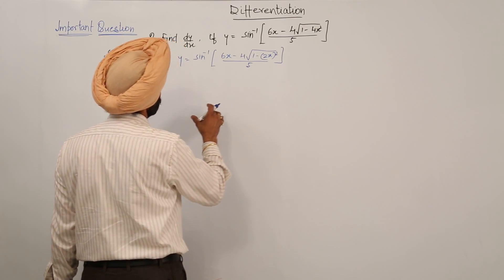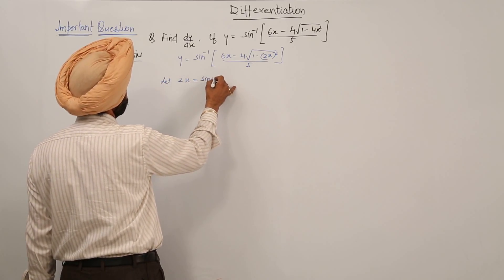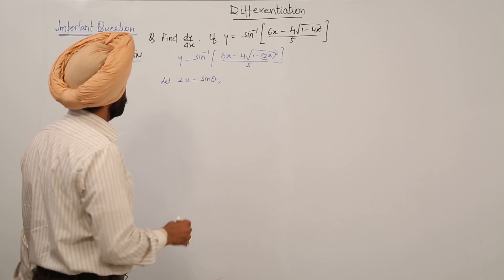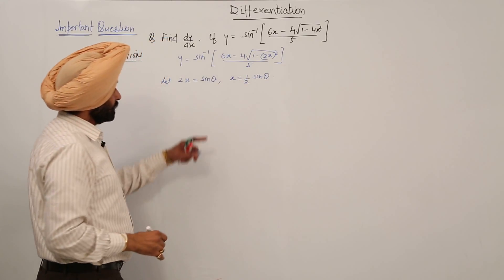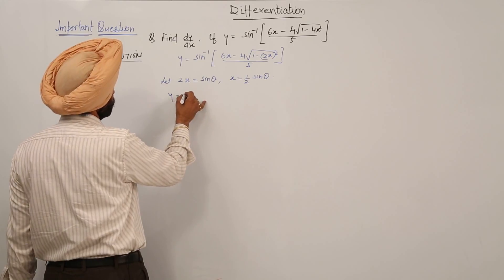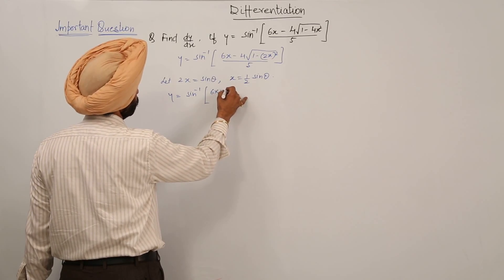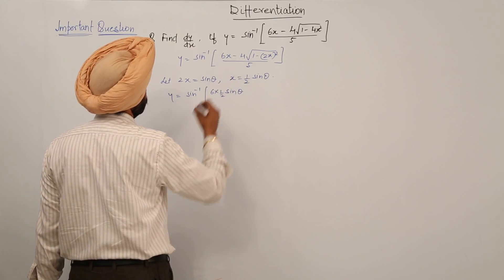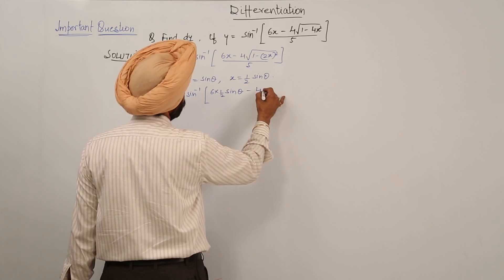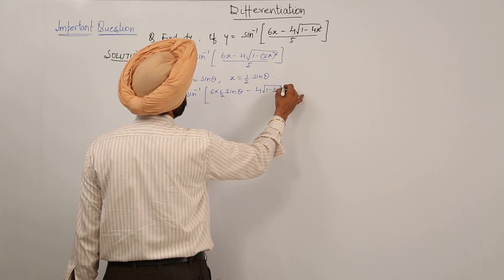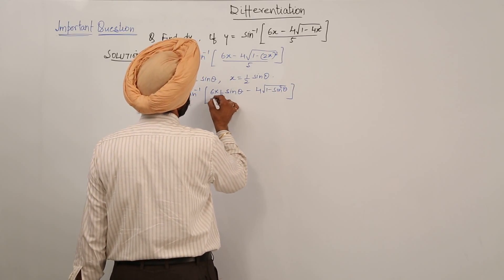Now for 2x, let us put 2x equal to sin θ. We are putting 2x equal to sin θ, so x is equal to (1/2) sin θ. Substituting these values, y is equal to sin inverse of (6 × (1/2) sin θ minus 4 times the square root of 1 minus sin²θ) upon 5.